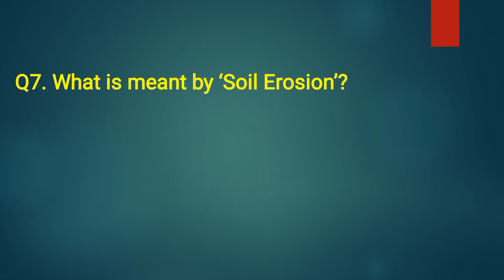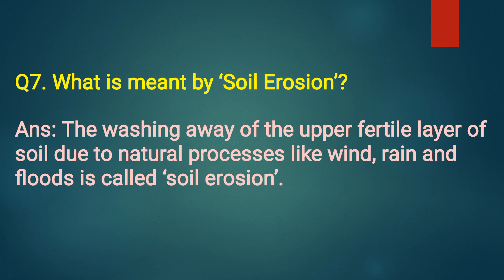Question number seven: What is meant by soil erosion? Answer: The washing away of the upper fertile layer of soil due to natural processes like wind, rain, and floods is called soil erosion.